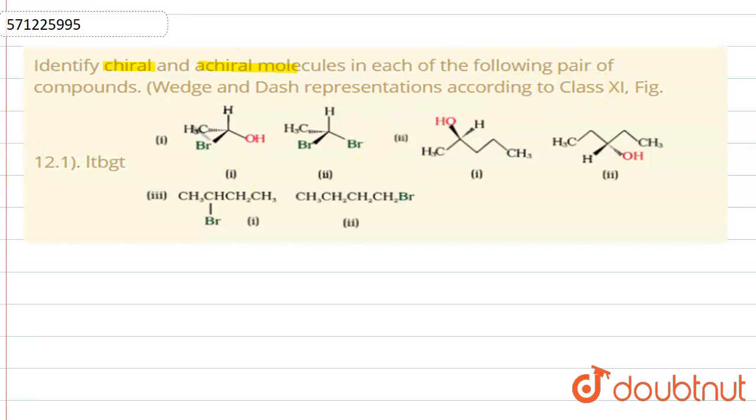So we have to find out the chiral carbons here. Chiral carbons are those carbons in which different substituents are attached to each carbon. For example, in one carbon, different types of substituents are attached. Then that type of particular carbon is known as chiral carbon.